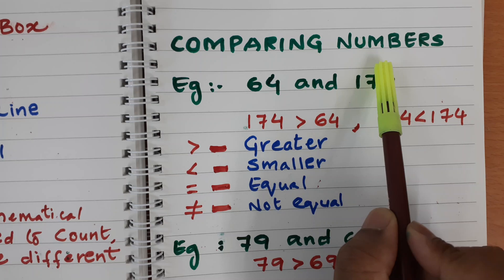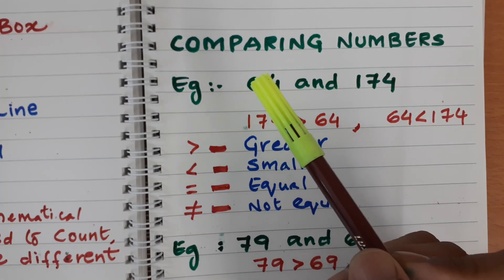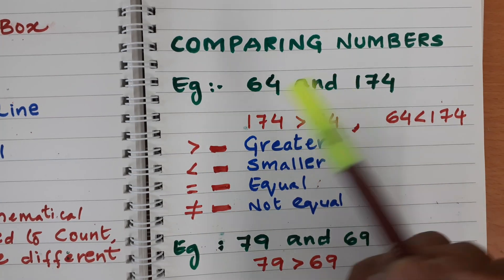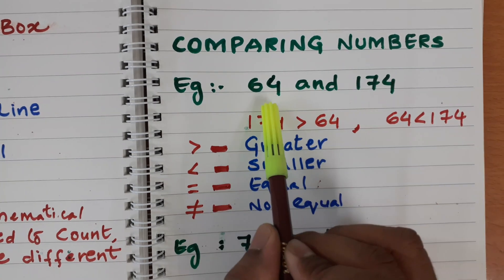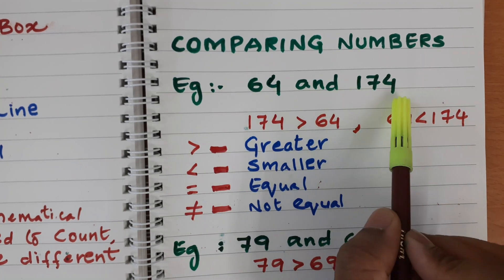Next topic is comparing numbers. We sometimes compare two numbers or two things. In that situation, what we have to do? Let us see an example. Here I have 64 and 174.